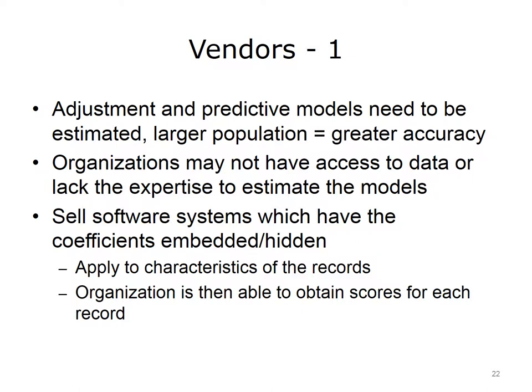The adjustment and predictive models need to be estimated, and for more accuracy those estimates should be based on a large population. Because organizations may not have access to the data needed to estimate the models, or may lack the expertise, they frequently acquire existing models from vendors. The vendors sell software systems which have the coefficients embedded — sometimes even hidden in the software — and then apply them to characteristics of the records at the organization. The organization is then able to obtain scores for each record to use for risk adjustment or predictive modeling. Sometimes the software just gives a list of people above a threshold rather than the score itself, so the organization cannot reverse-engineer the coefficients.